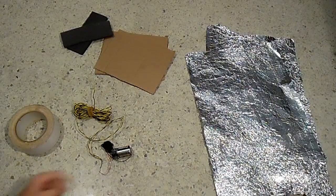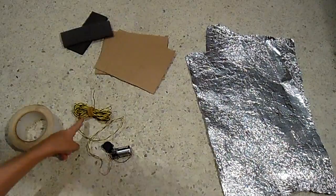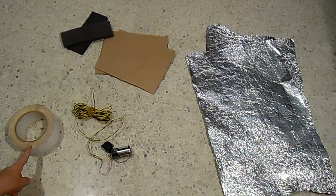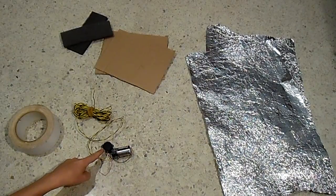To make your pressure plate alarm, you need aluminum foil, cardboard, some wires, duct tape, foam, a battery, and a buzzer.